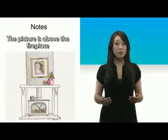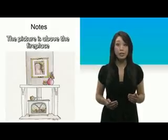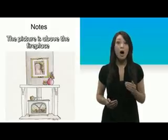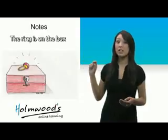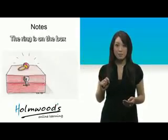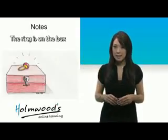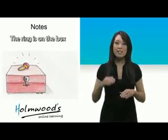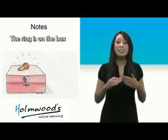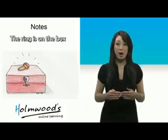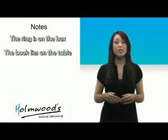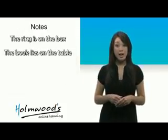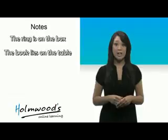'Above' is different from 'on.' The ring is on the box. This means that it is lying on top of the box. The book lies on the table.